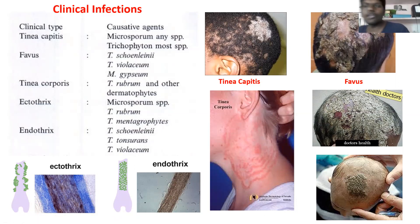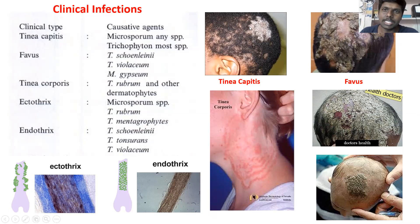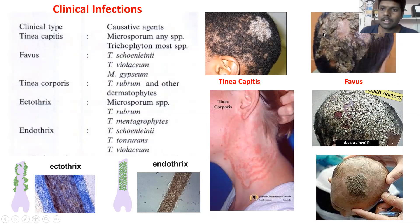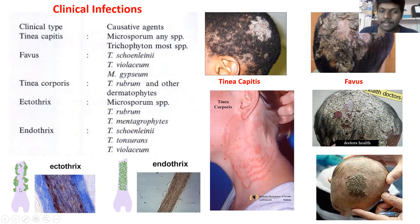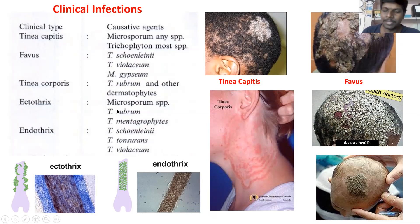So these are the five types of clinical infections caused by dermatophytes: tinea capitis, which is a patchy fungal infection on the hair; favus, seen by the presence of bright yellow-green colored fungal growth on the hair; tinea corporis, a fungal infection on the non-hairy part of the skin; ectothrix, on the periphery of the hair shaft; and endothrix, on the surface of the hair shaft.